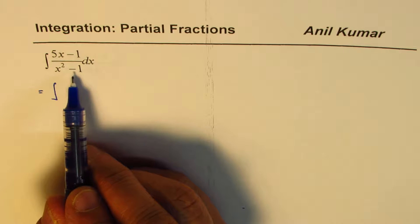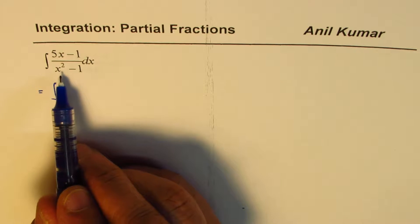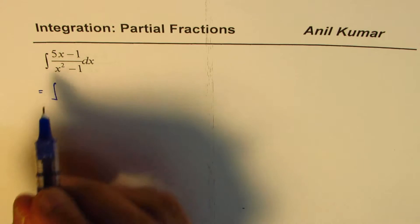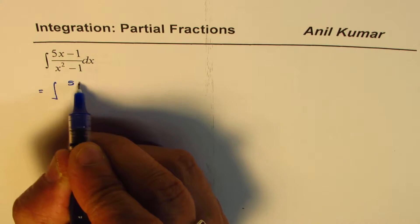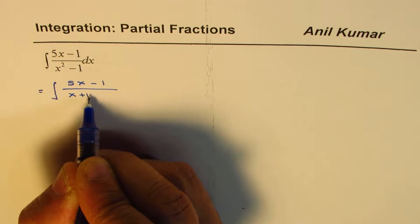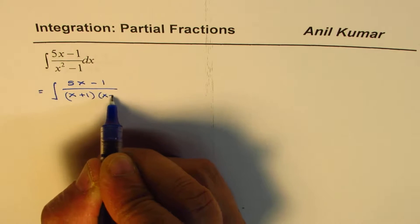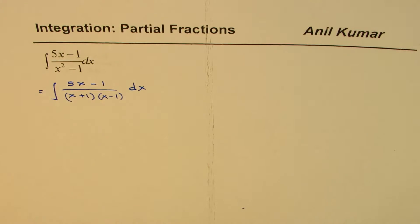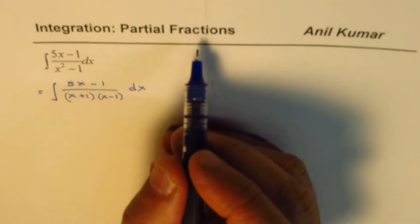Second, we also observe that this is a proper rational function. Since the degree of denominator is higher, we could write this as 5x minus 1 divided by x plus 1 times x minus 1 dx. So that is how we should first factor the denominator, and then the next step is partial fractions.